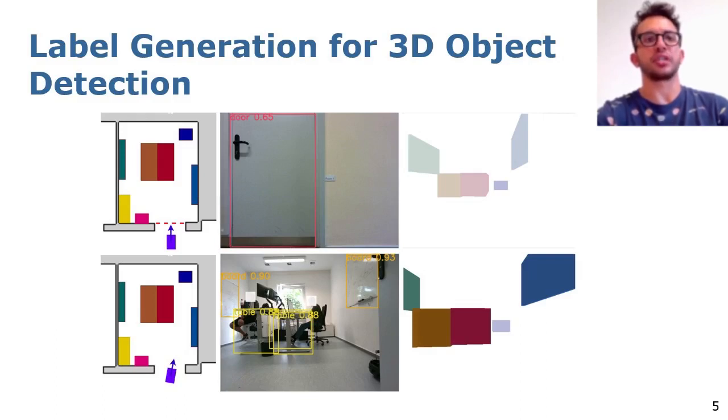In the bottom row, the 2D object detection detects tables and boards, but not the drawers, due to occlusion. Therefore, 3D annotations are generated only for the boards and the tables, and not for the drawers, which is still faded.